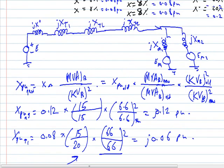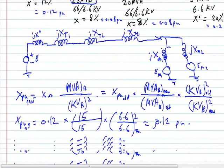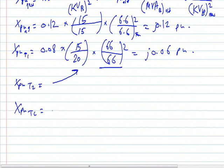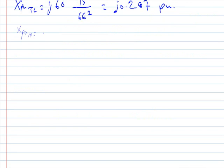In the transmission line, they already gave us the ohmic value, not the per-unit value. We will convert it: 60 ohms, which is the actual value, multiplied by the base MVA of 15, over the base voltage of 66 squared. This gives us j0.0207 per unit.